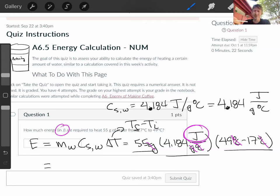And then now I'm just going to run it backwards, times 4.184 times 55, and I get 7,363.84 joules.